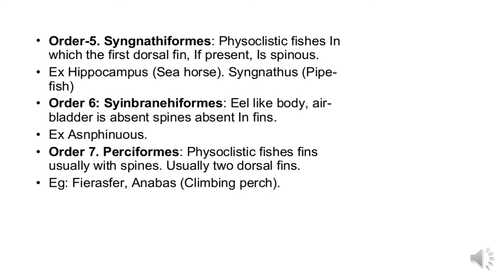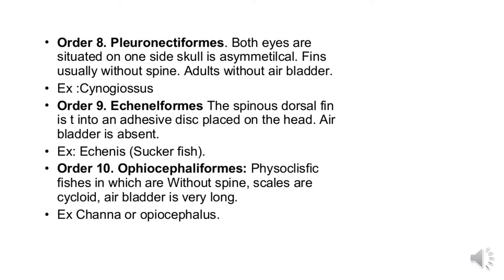Order 7 is Perciformes: physoclistous fish with fins usually having spines, and usually two dorsal fins present. An example is Anabas (climbing perch). Order 8 is Pleuronectiformes: both eyes are situated on one side, skull is asymmetrical, fins are usually without spines, and the air bladder is absent in adults. An example is Cynoglossus. Order 9 is Echeniformes: the spinous dorsal fin is modified into an adhesive disc placed on the head and the air bladder is absent. The example is the sucker fish.